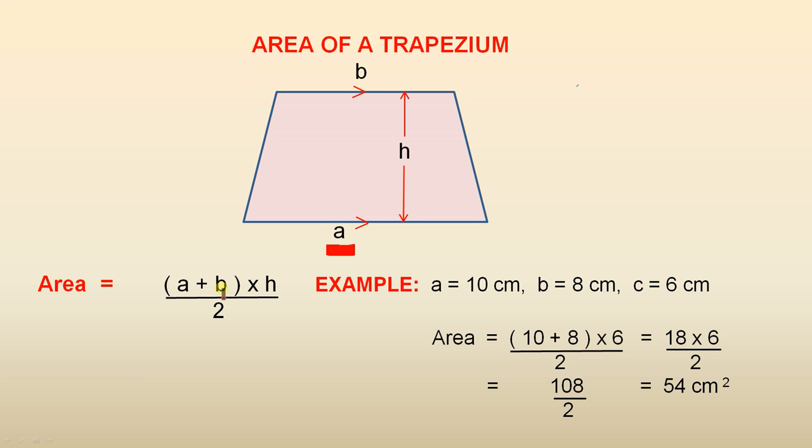You add the two parallel sides together, multiply that answer by the height, and then divide by 2, and that gives you the area of the trapezium. So if a is 10, b is 8, and c is 6, they're all centimeters.